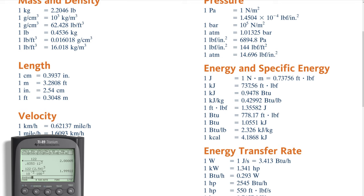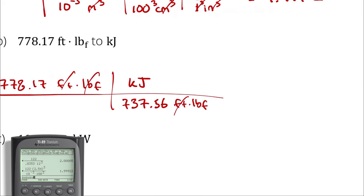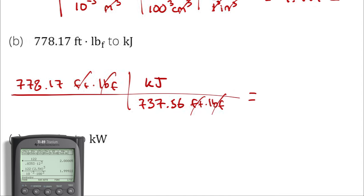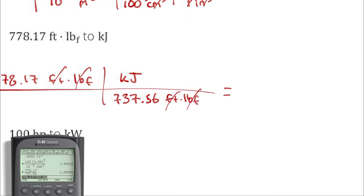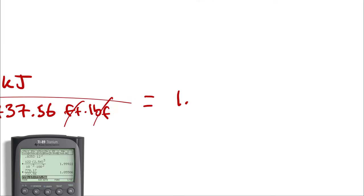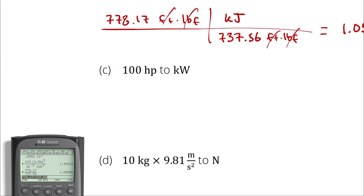That's exactly what we want. So I will say one kilojoule is equal to 737.56 feet times pounds of force. Feet cancels feet, pounds of force cancels pounds of force, and I will be left with kilojoules. 778.17 divided by 737.56 yields 1.055. Part B done.